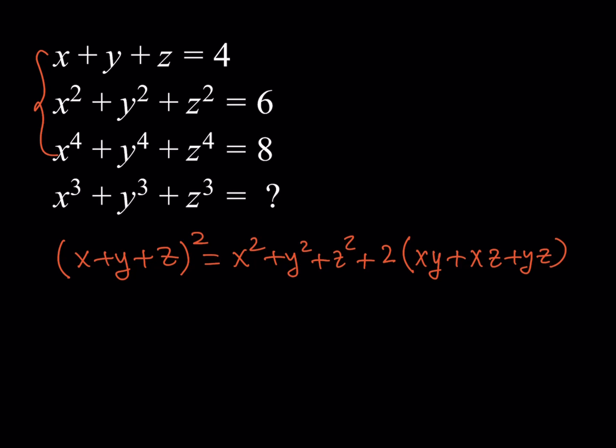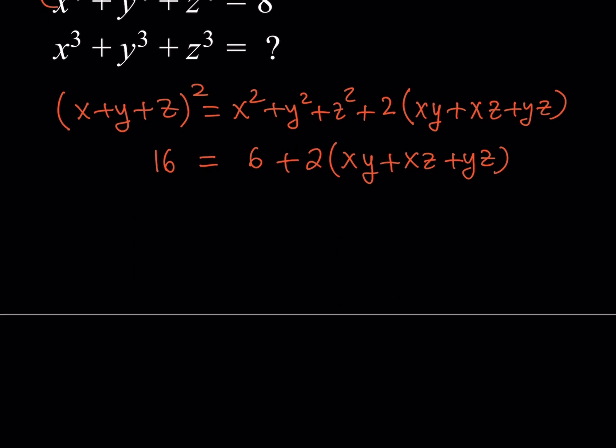Since we know x plus y plus z we can just square it and that's going to be 16, and we also know x squared plus y squared plus z squared which is 6. From here we should be getting something nice which is xy plus xz plus yz. So I'd like to subtract 6 from 16, divide by 2, so that should give me something I would like to keep because I'm going to use it later on and that would be 5.